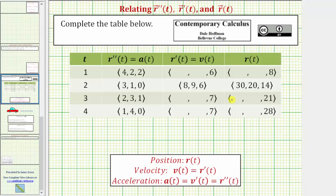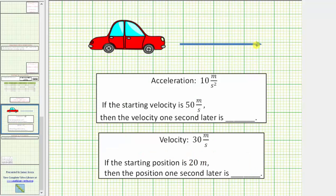Before we complete the table, let's look at an example. Let's assume we have a car driving down a straight road, and the acceleration is 10 meters per second squared. Remember, the acceleration indicates the change in the velocity. So if the starting velocity is 50 meters per second, then the velocity one second later is going to increase by 10 meters per second, because the acceleration is 10 meters per second squared. 50 plus 10 is 60, and therefore one second later, the velocity is 60 meters per second.